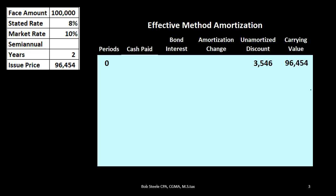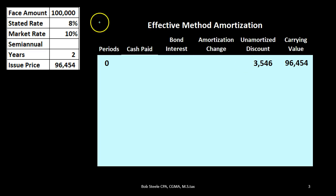We're going to use the more proper method: the effective method. It's more proper because it allocates based on the carrying amount — similar to an installment note — and is therefore more accurate in terms of interest allocation. We're starting in the same place: the carrying amount is always calculated as $100,000 minus the unamortized discount. The unamortized discount starts as the face amount minus the issue price: $100,000 minus $96,454, giving us $3,546. The carrying amount is therefore $96,454.